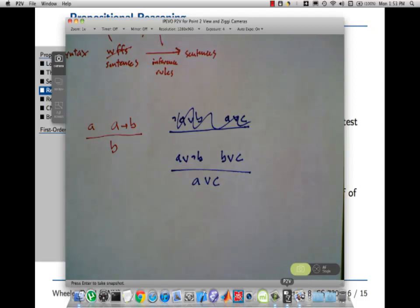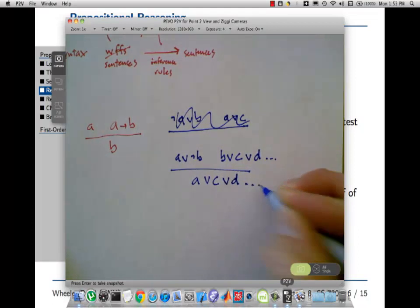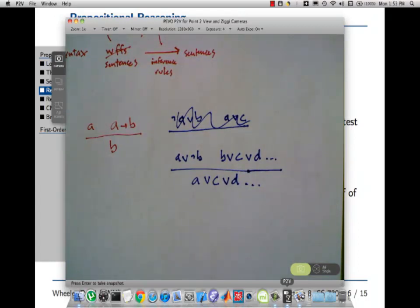This inference rule is called resolution. If you want to think in more exciting, visceral, pseudo-physical terms, you can think of the B and the not B kind of colliding in a matter meets antimatter explosion and disappearing and annihilating each other and you're left with just A or C. So that's resolution. Resolution is sound. And if you allow these disjunctions to be arbitrarily long, so that you could have B or C or D, and then you just end up with this underneath, if you allow that, that's called generalized resolution, it is in fact complete. Super handy.